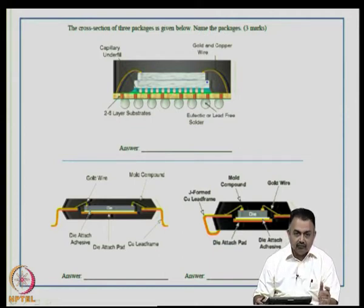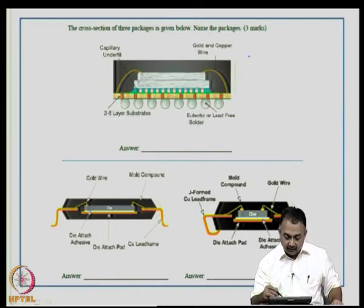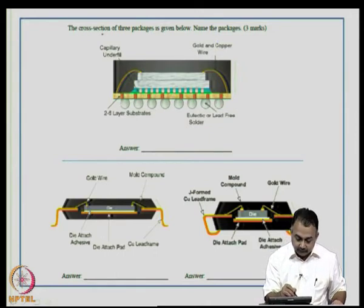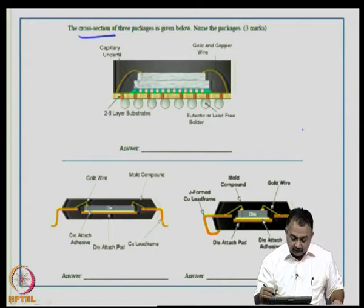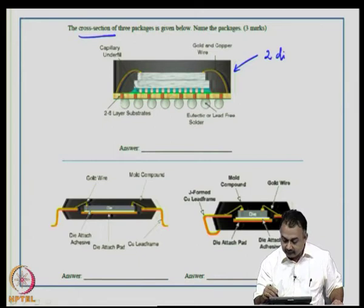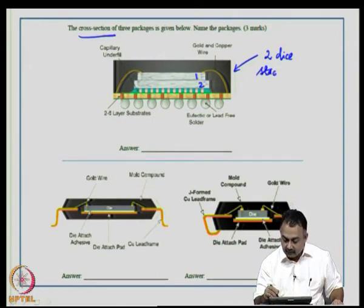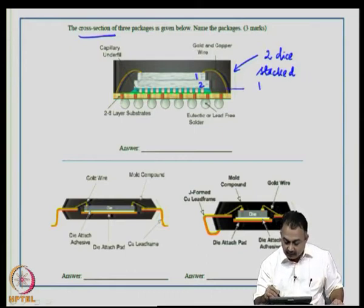This is a cross-section of packages emphasized in the previous chapter. Looking at the first figure, there are two dice — die 1 and die 2 — which are stacked. This is a wire-bonded configuration, where the dies are stacked on a substrate.